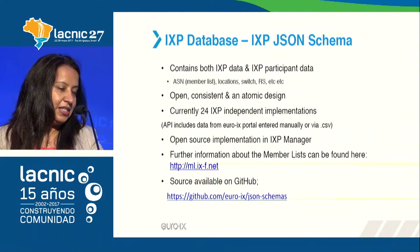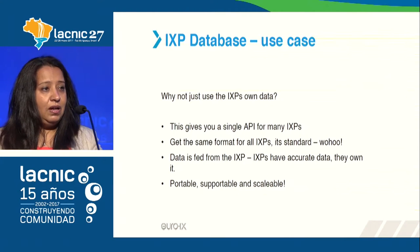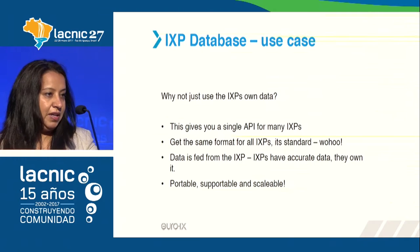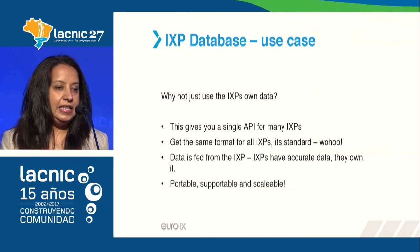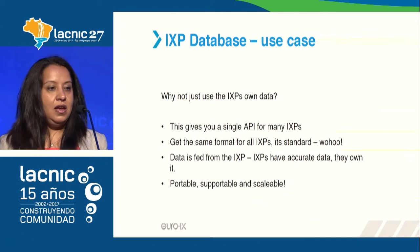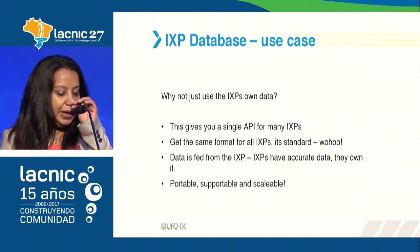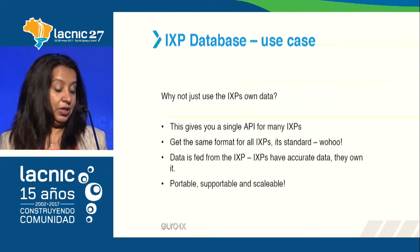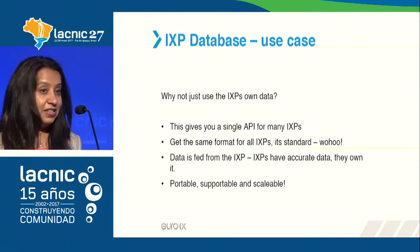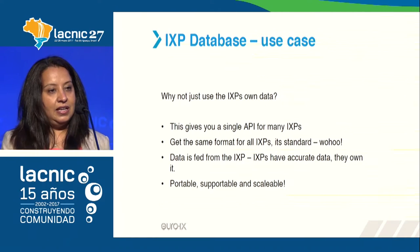Everything is open source, so you can access the GitHub source code. You might wonder — why not just get the information directly from the IXP? The reason we built this is that many people were going to multiple IXPs and getting data with no standard format — just a data dump they had to sort through. This API gives you a single API for many IXPs, so you get all the information and can filter what you need. It's standardized, and the data comes directly from the IXPs, who own and have the most accurate data.